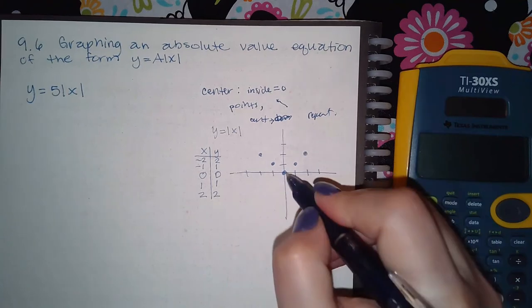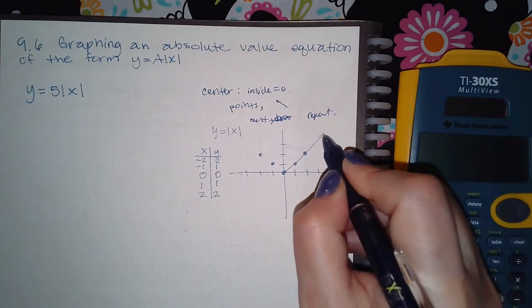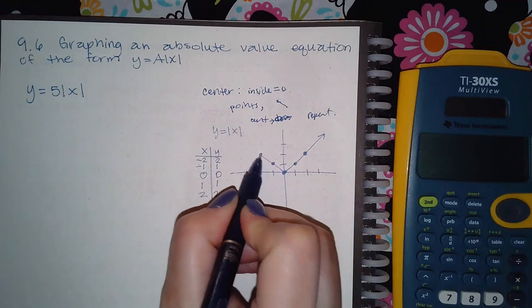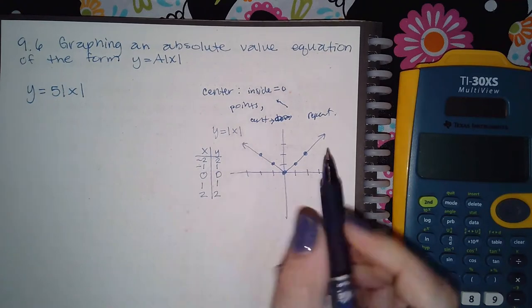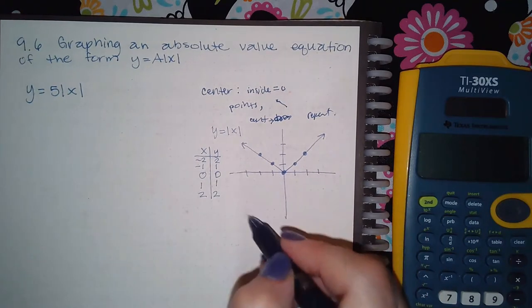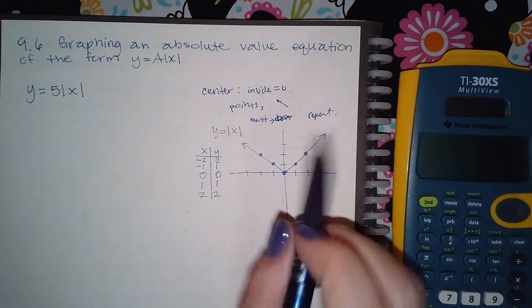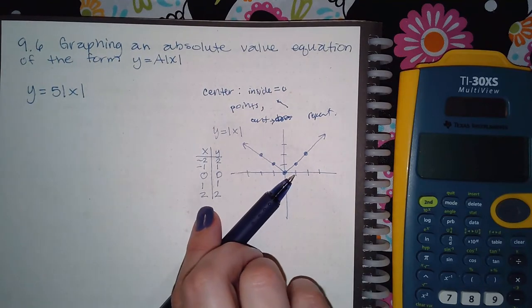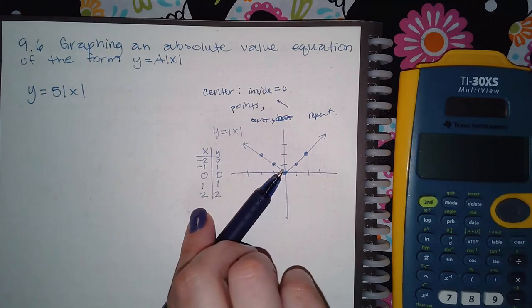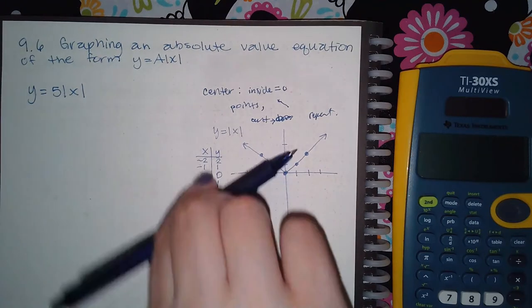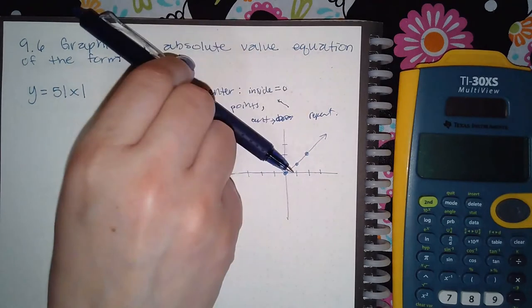And so what happens is it creates this V shape. It's essentially a line, but then all the negative values turn positive. So that's why it goes upward like this. So it should have been here, and then because all the y values are non-negative because of the absolute value, it shifts it so that it's up here now.